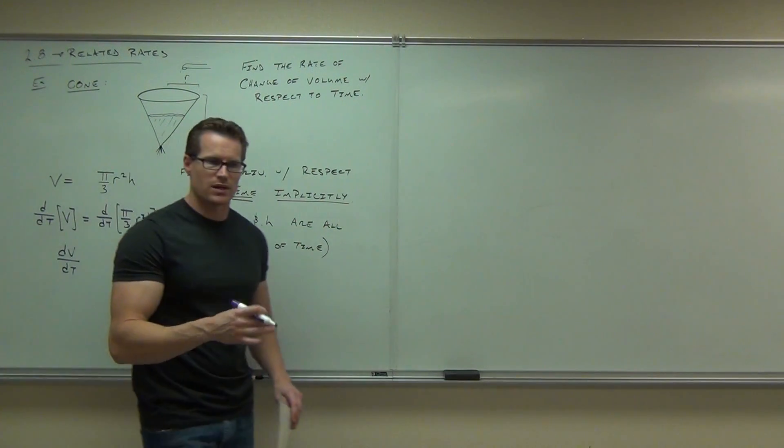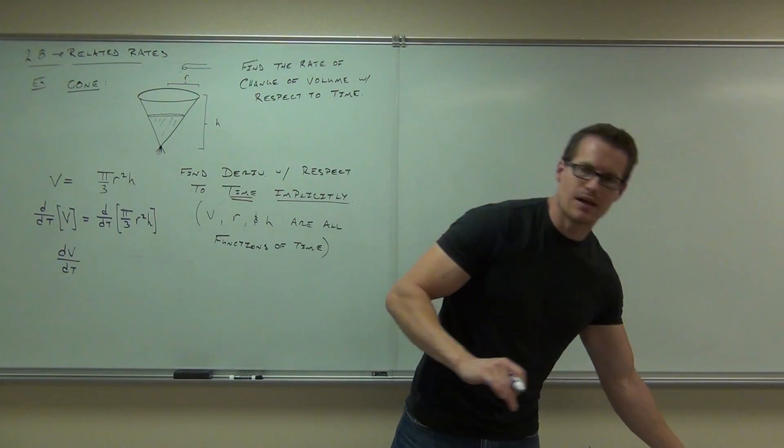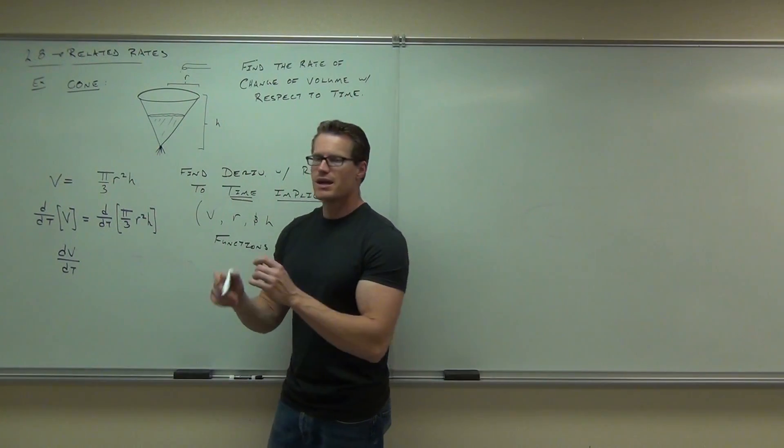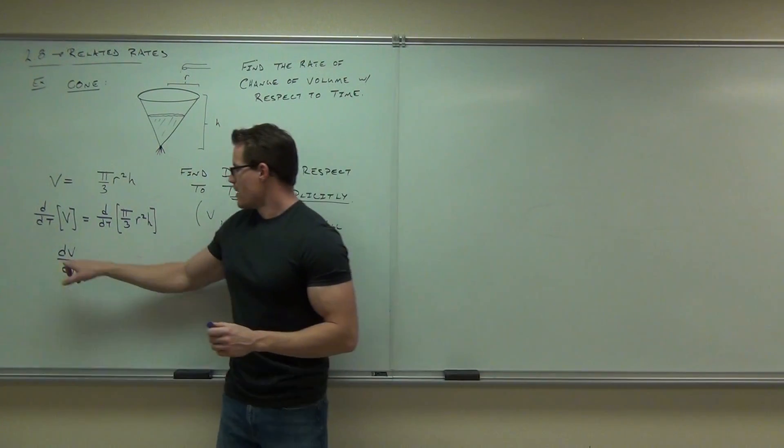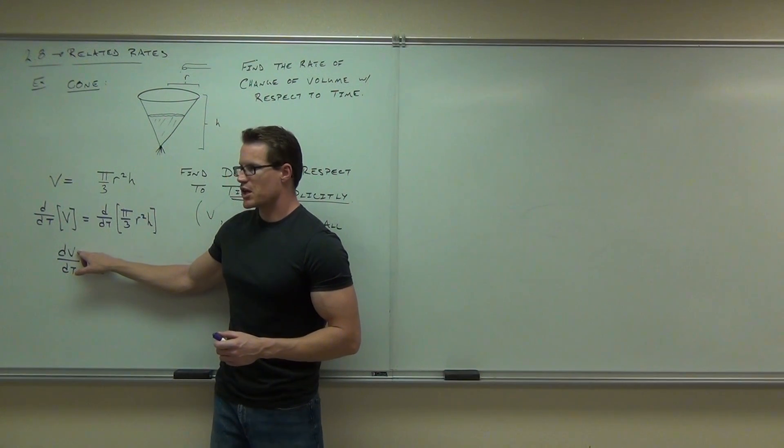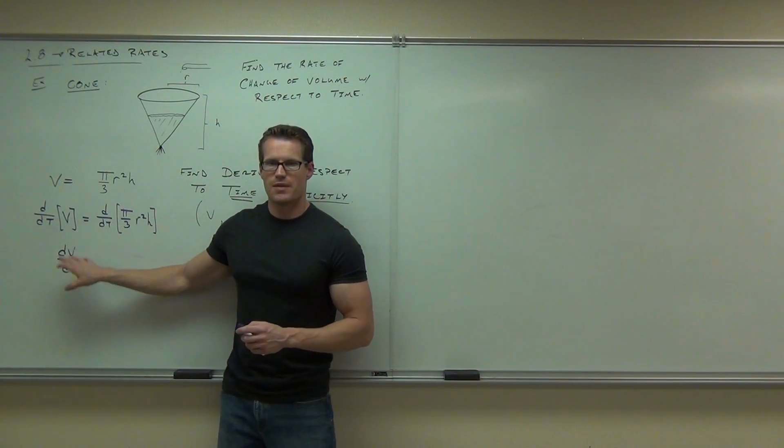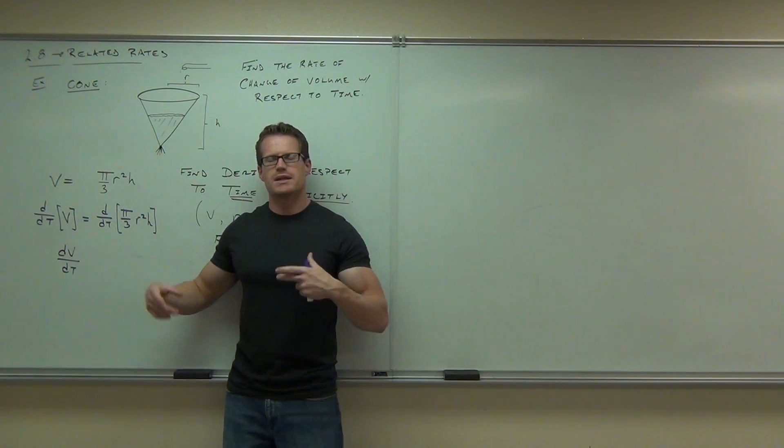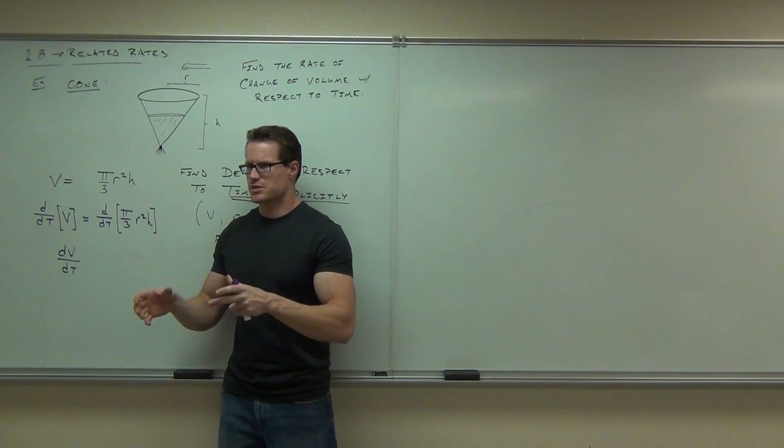It's implicit. It's saying that v is a function of t. You have to have the d, dt. Here's what this says in English. This says this is how the volume is changing with respect to time. That's the rate of change of the volume. Does that make sense to you? You see why we need that d, dt? It is an implicit derivative.